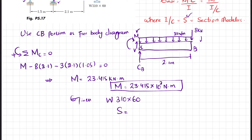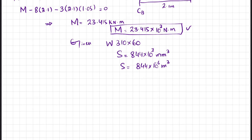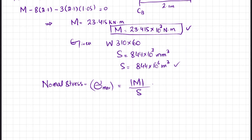So the section modulus S equals 844×10³ mm³, or in meters that is 844×10⁻⁶ m³. Now with both M and S, we can compute the maximum normal stress: σ = M/S = 23.415×10³ divided by 844×10⁻⁶.